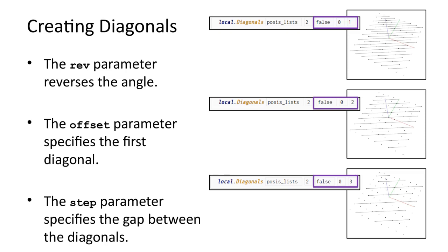The local.diagonals function has three other parameters. The rev parameter reverses the angle.